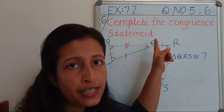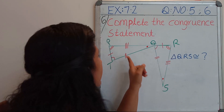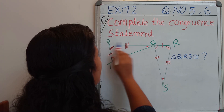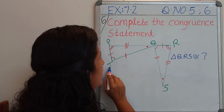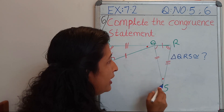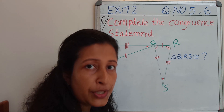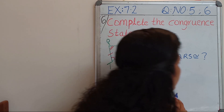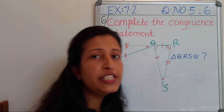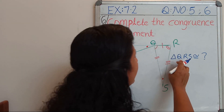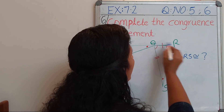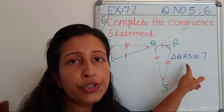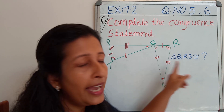In the same question, part B — here too you can see two triangles: triangle PQT and QRS. Actually, our question is: triangle QRS is congruent to which triangle? Here too we are going to find the corresponding angles.